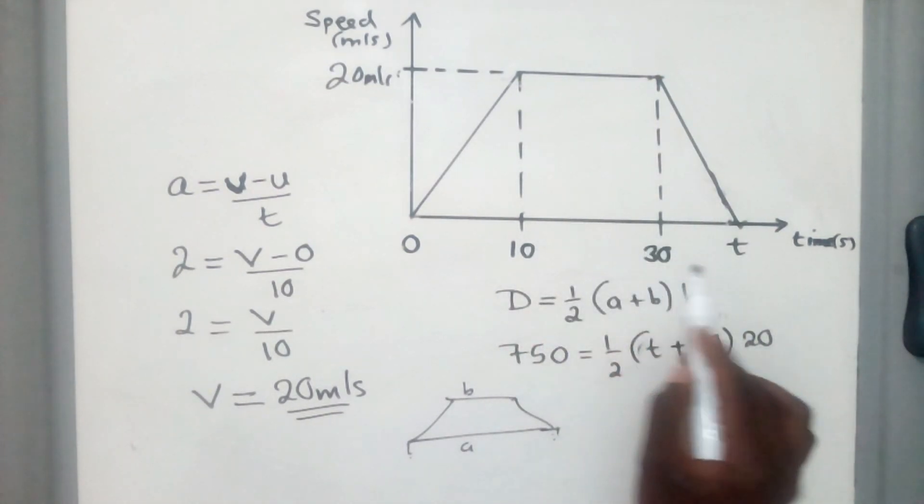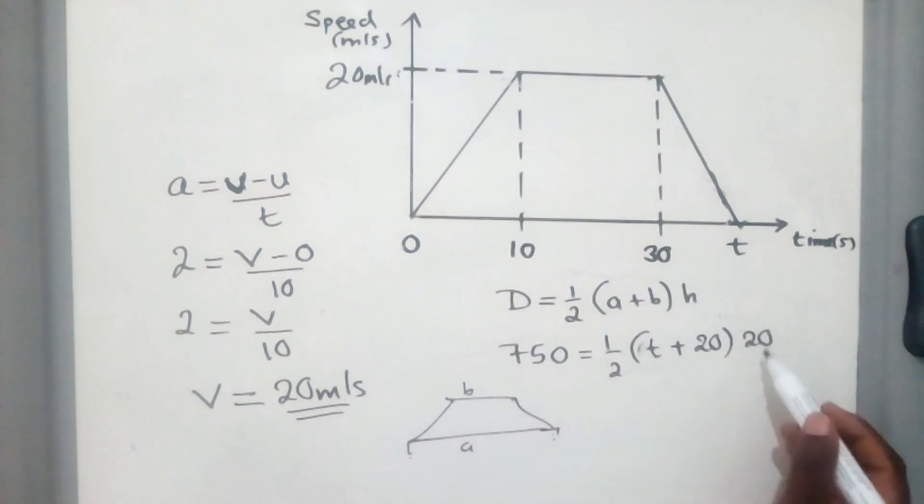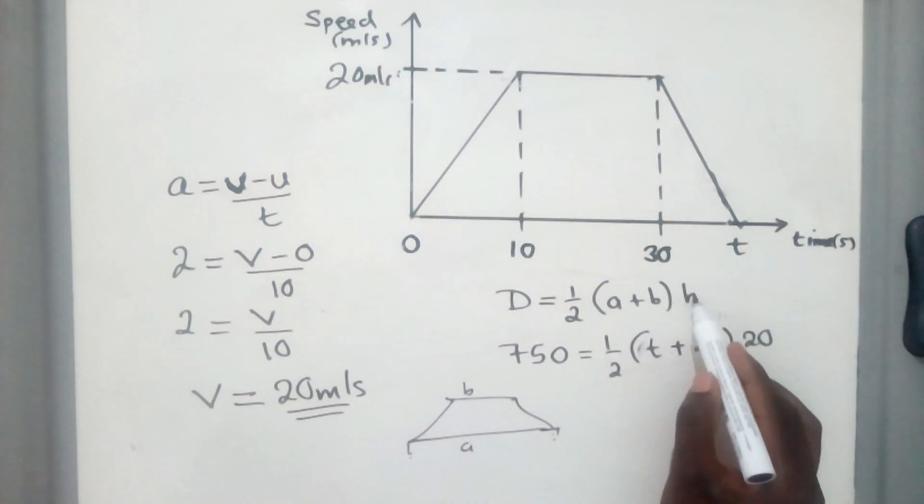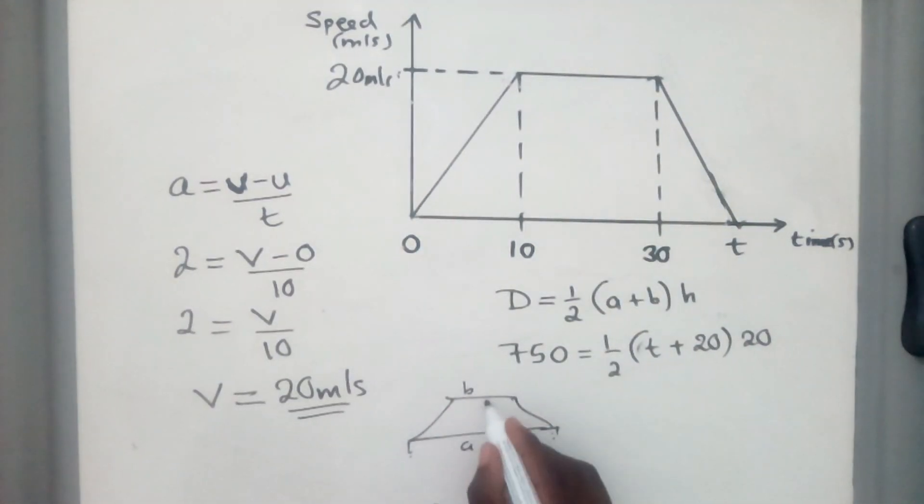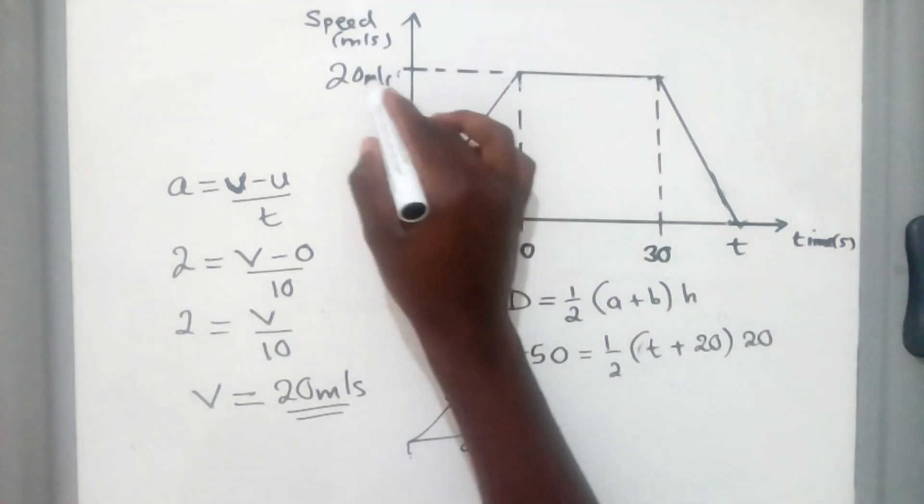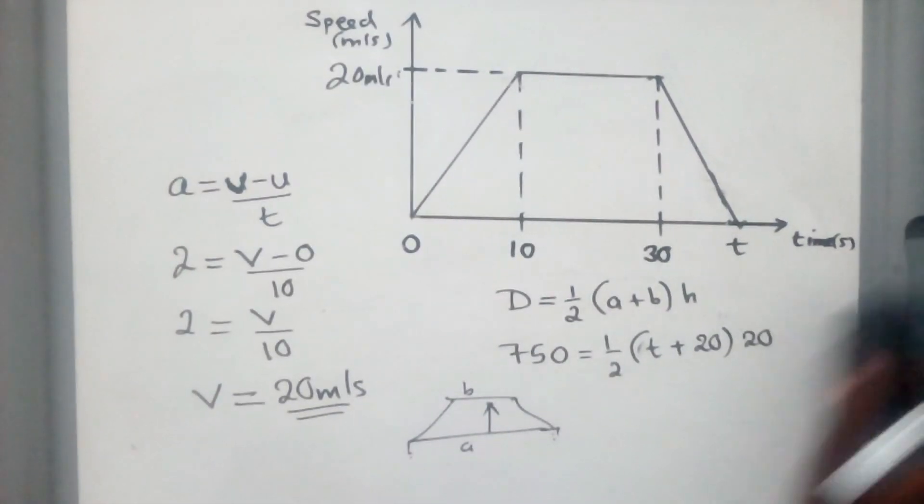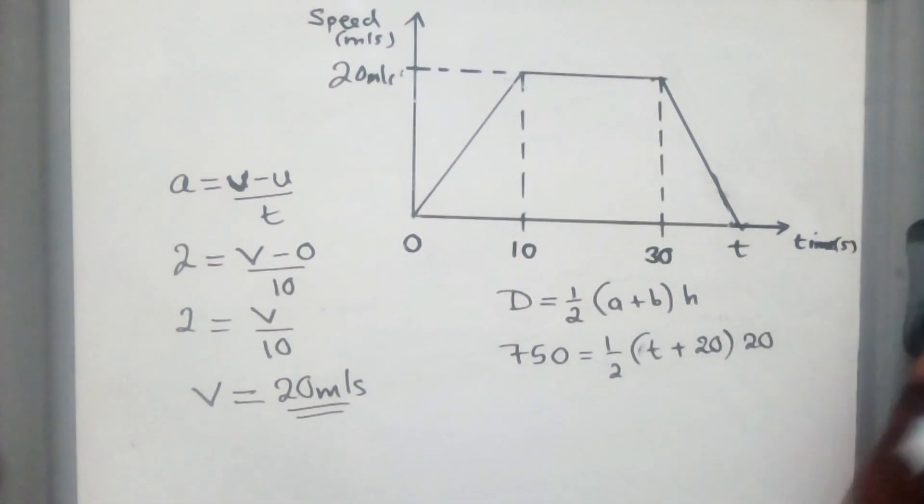We just say 30 minus 10. It will give us a 20. That's how I managed to find that. And then for h here, the h is the height from here to here. So it's the same as like from here to here. If you can see, this is 20. All right. So we can now finish it up.